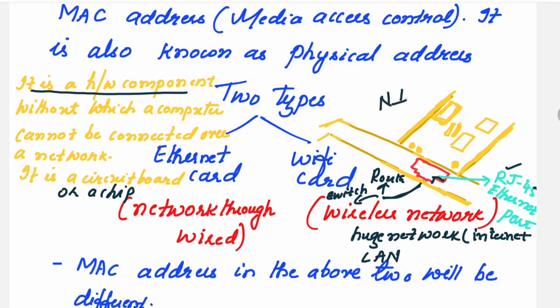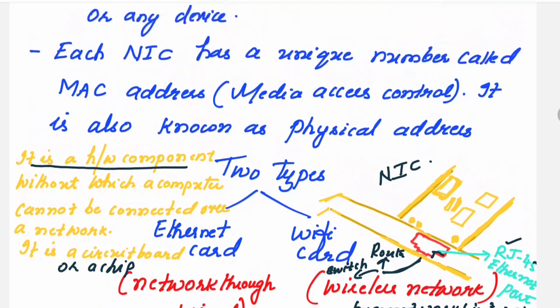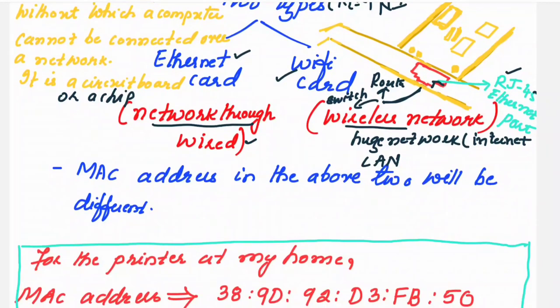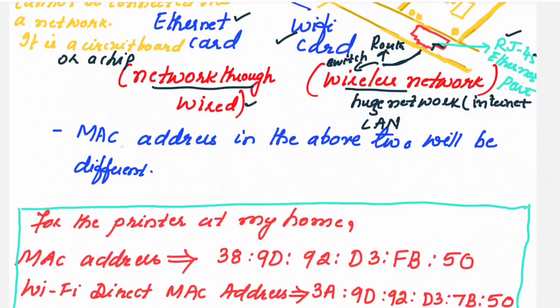On the NIC is printed a unique number called the Media Access Control address — in short, the MAC address — also called the physical address. Network interface cards are of two types: the ethernet card and the Wi-Fi card. If you want to connect your device to a wired network, the ethernet card is needed. If you want to connect to a wireless network, the Wi-Fi card is needed. Nowadays devices have both cards since we use both wired and wireless connections.